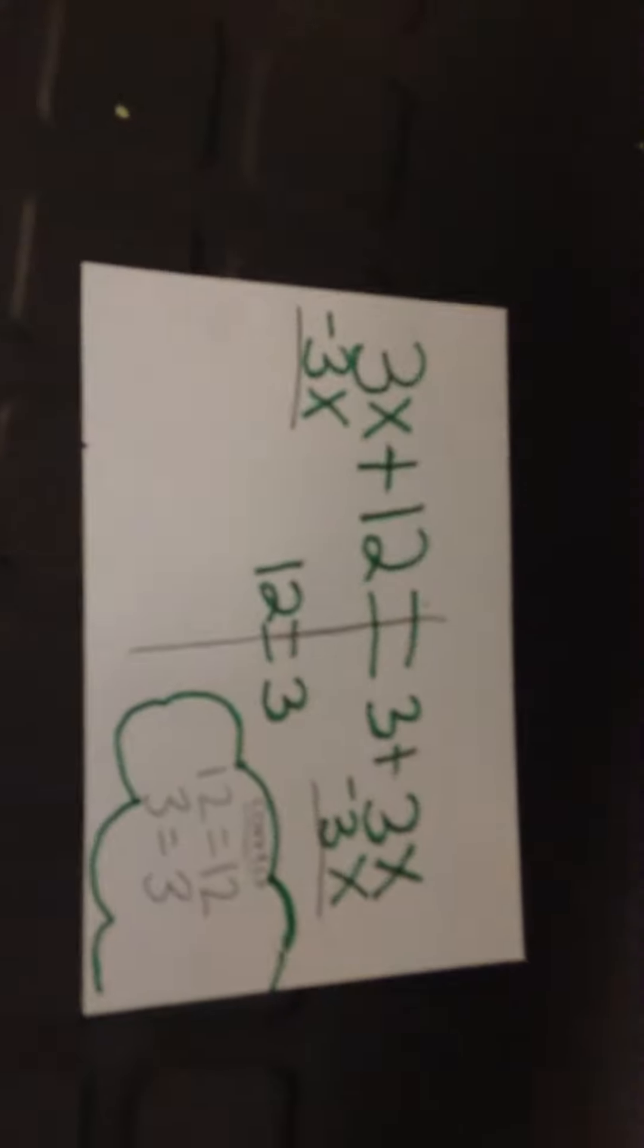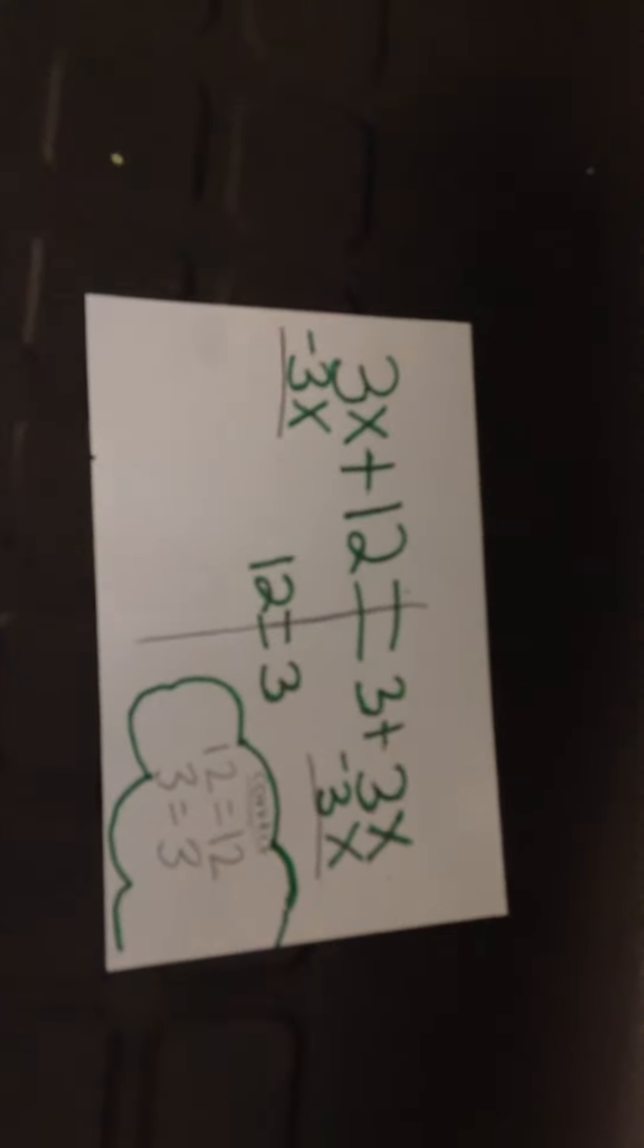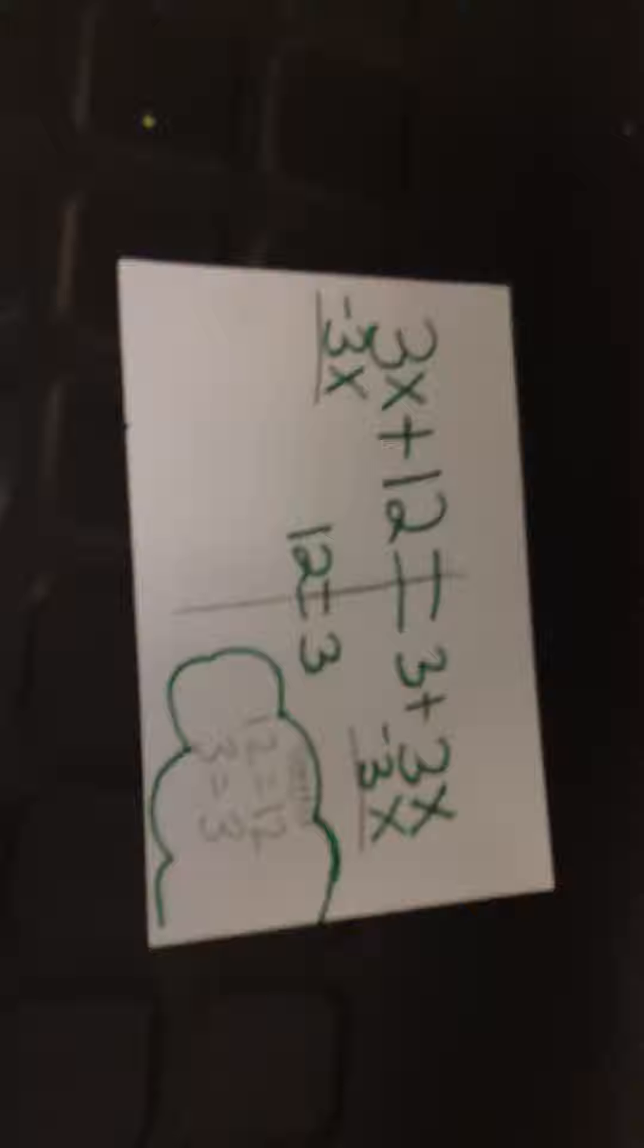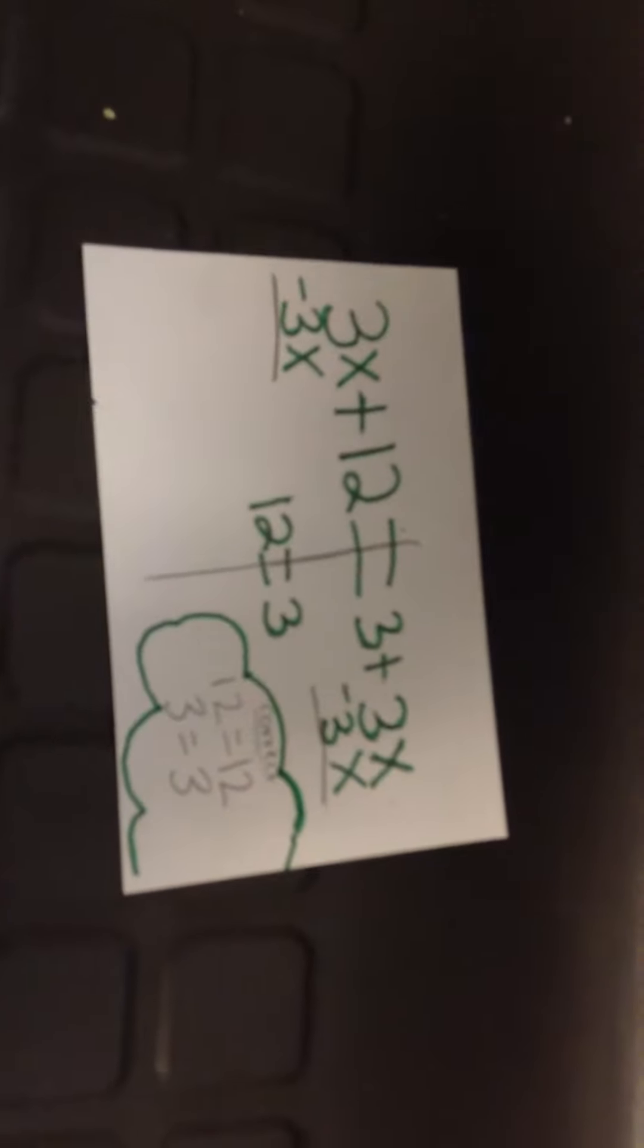Three x plus twelve equals three plus three x. You subtract three from each side, and bring down the twelve and the three, which will equal twelve equals three. But the scale will never be balanced, because there is always a number nine difference.